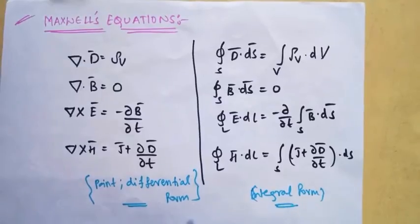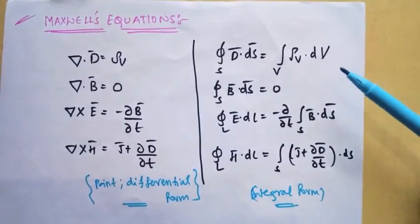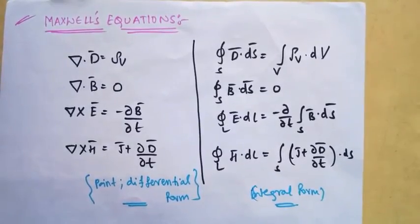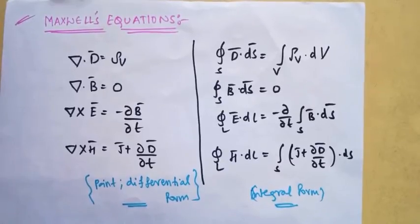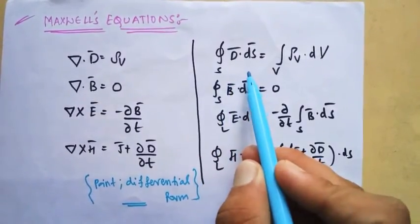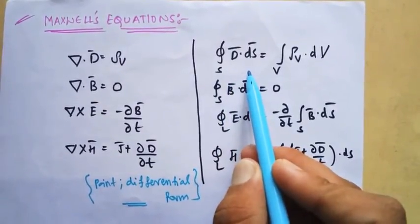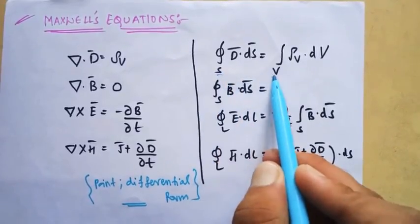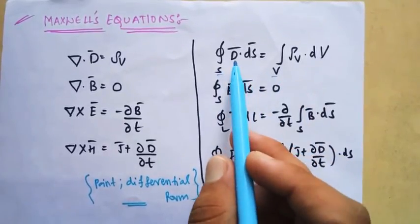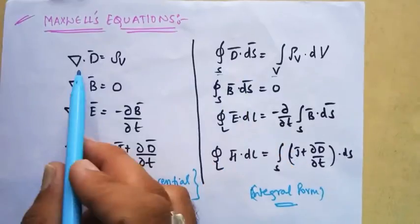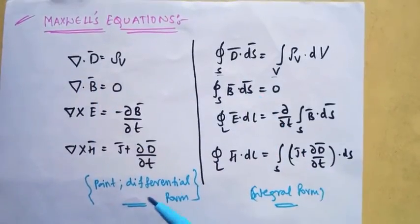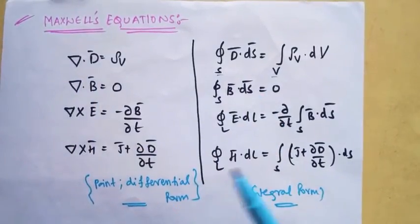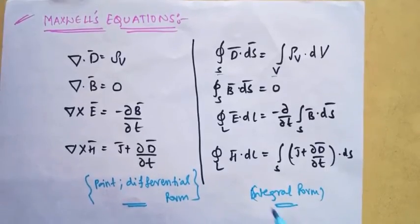If you clearly observe, we derived all four equations in both forms in our previous videos and you can relate these two. By applying the divergence theorem, we can convert the surface integral into the volume integral by replacing d-bar with del dot d. If you remember either set of four equations, you can easily obtain the other set.